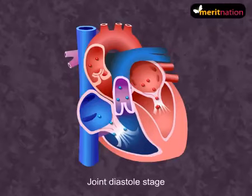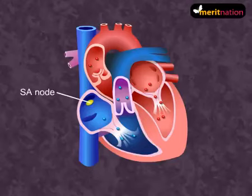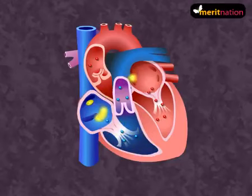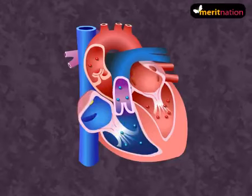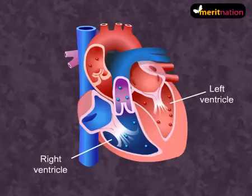Now, atrial systole is initiated when the SA node sends out an electric signal. During atrial systole, the atria undergo continuous contraction which forcefully passes the blood into the ventricles through the tricuspid and the bicuspid valves.